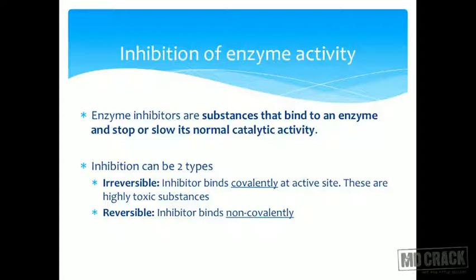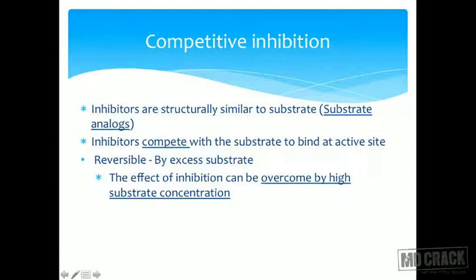Based on binding location, we have two different types of inhibition. Both these types can be reversible or irreversible. The first type is competitive inhibition. Competitive means two substances are competing against each other — there is a race between the substrate and the inhibitor to reach the finish line, which is the active site. Both the inhibitor and the substrate want to bind to the active site, which is highly specific.